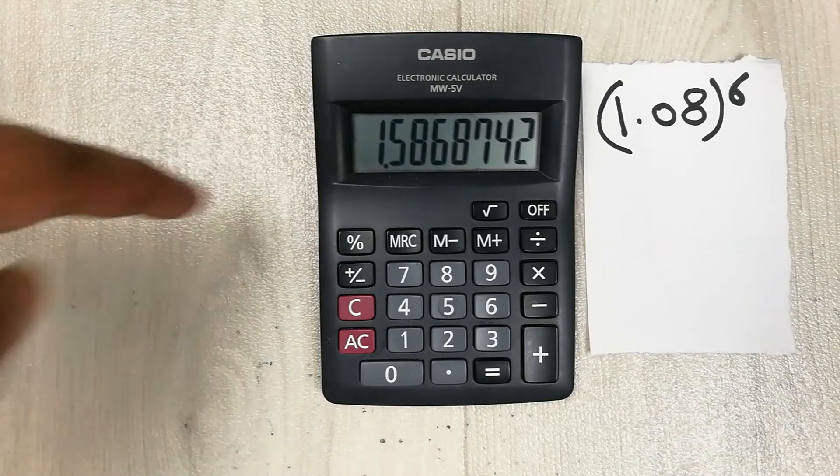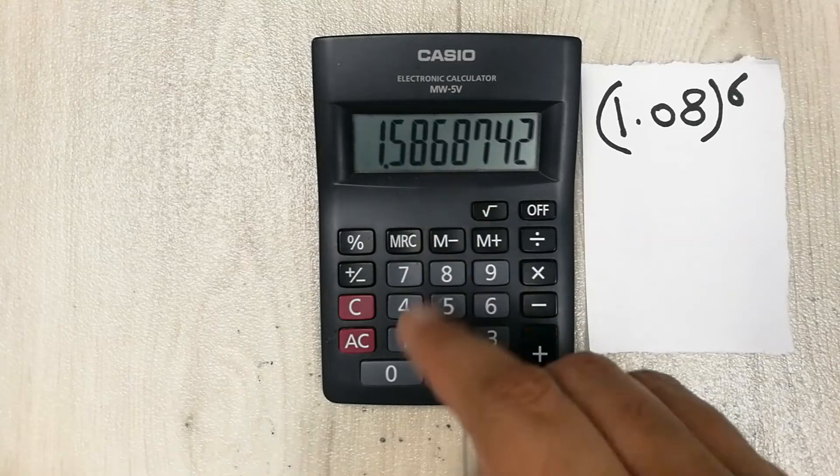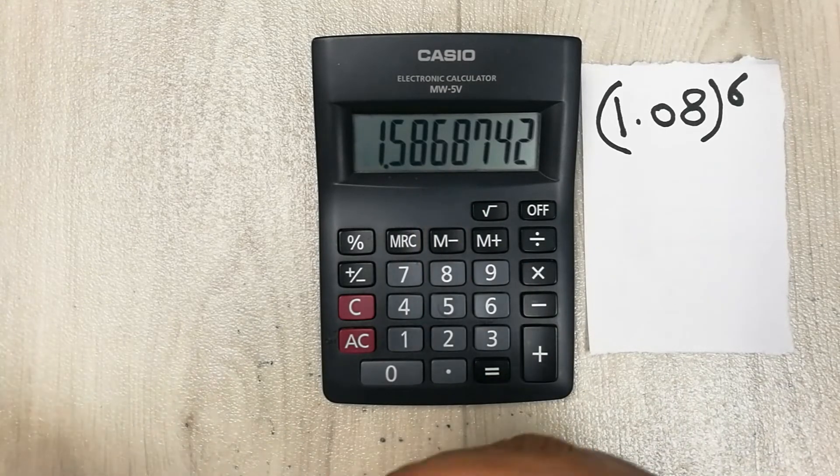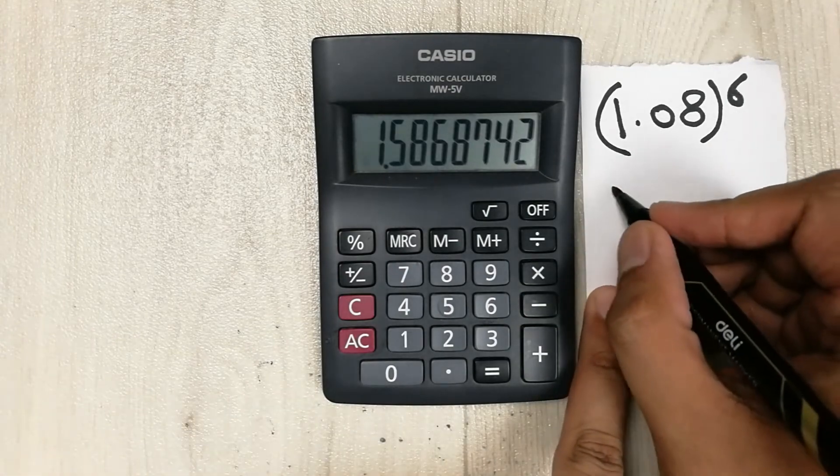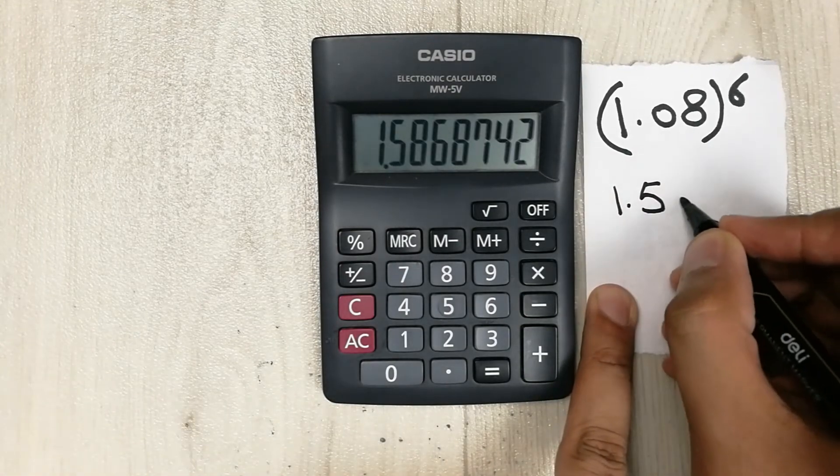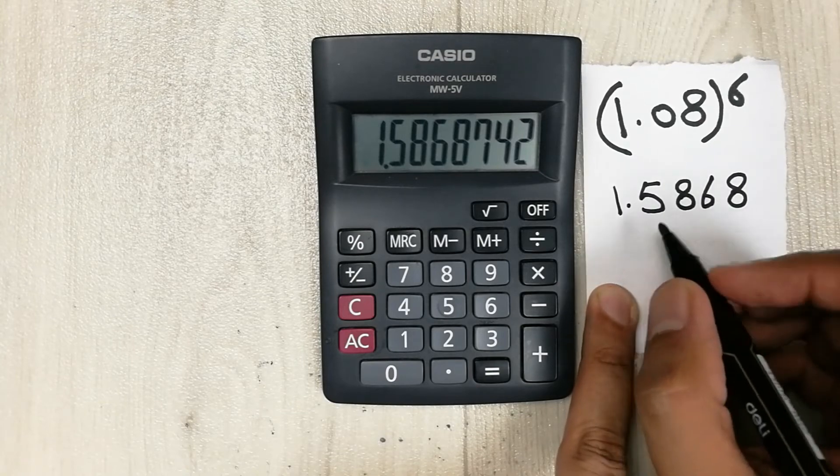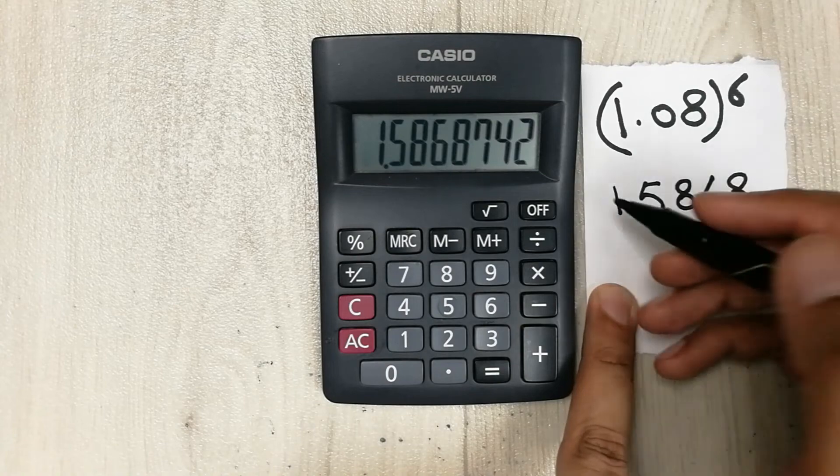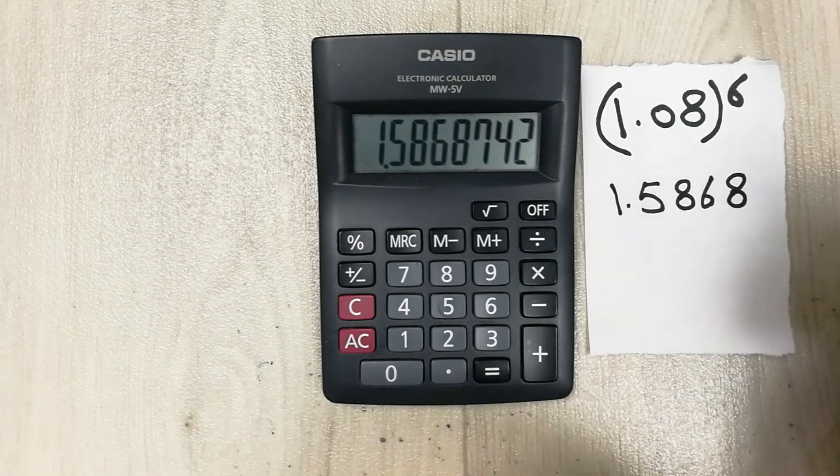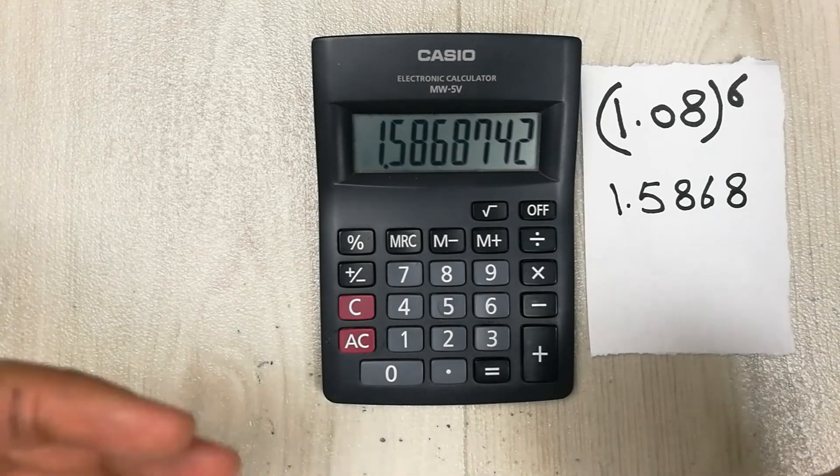So guys, here is our answer. So 1.5868 is the final answer for that value. Okay, so we will write it like this: 1.5868. As I already mentioned, always write up to the four numbers to get the correct calculation. So guys, this is how you can find out the power of any value on your basic calculator.